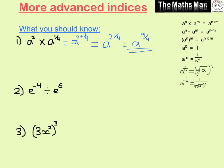For the second one, when we're dividing indices we need to subtract them. So we're going to have e, then minus 4 minus 6. Minus 4 minus 6 gives us minus 10, so that's e to the power of minus 10.